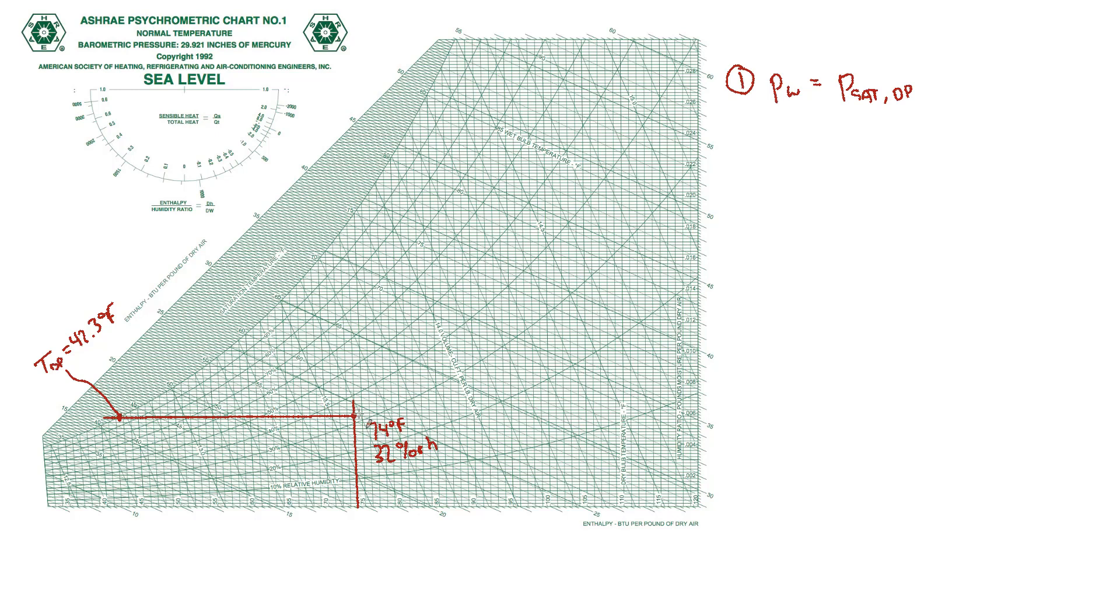So for a given state point that you're starting from, some temperature and relative humidity, just like what's in my room right now, you find the corresponding dew point temperature, 42.3. And then you go into the steam tables and find out what the saturation pressure of water vapor is for that temperature.